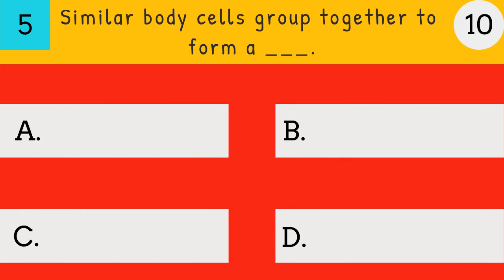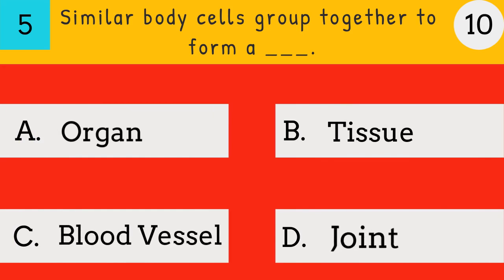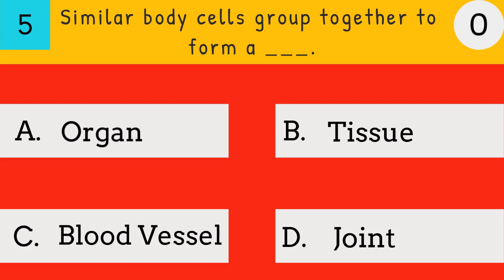Similar body cells group together to form a — organ, tissue, blood vessel, or joint? The answer is tissue — similar body cells group together to form a tissue.